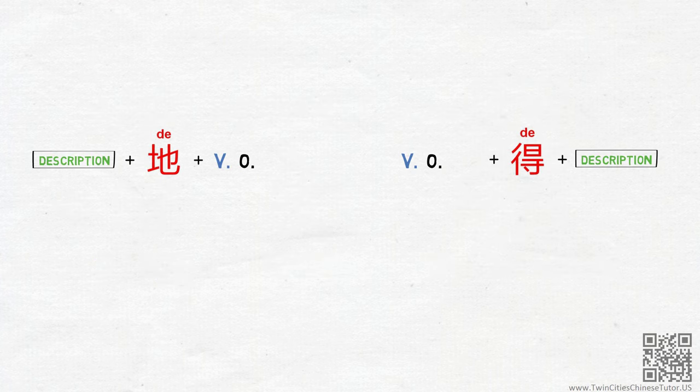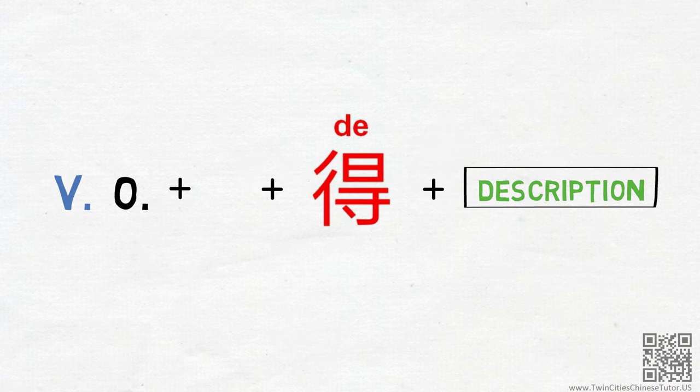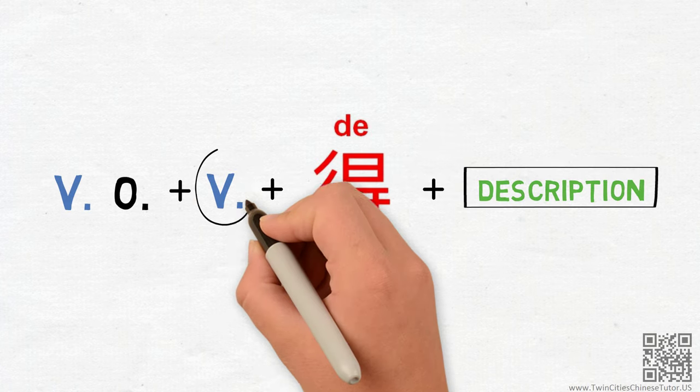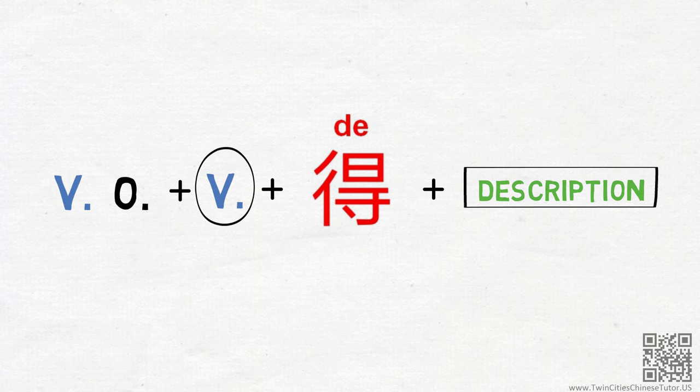When objects come into play, the second 的 pattern remains pretty much the same. But the third 的 pattern will require an additional verb between the added object and the 的. This addition is tricky and takes practice to get used to for English speakers.